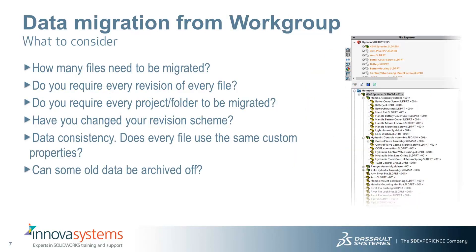What do we need to consider when migrating data from workgroup PDM? Firstly, we can look at how many files need to be migrated. We'd also need to understand whether every revision of every file is required, and whether every project folder needs to be pulled across. Has the revision scheme changed over the usage of PDM workgroup? Is the data consistent — does every file use the same custom properties? We can also look at whether any old data can be archived off. All of these things can have an impact on the time required for the migration and therefore the cost, so it's always worth getting in contact with us to discuss what you need and how we can help.